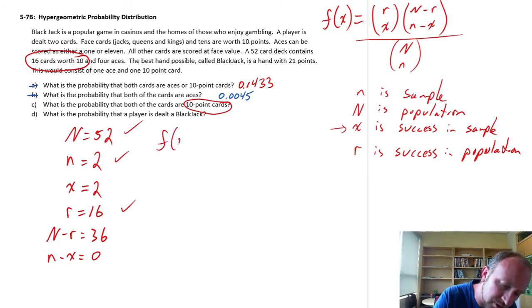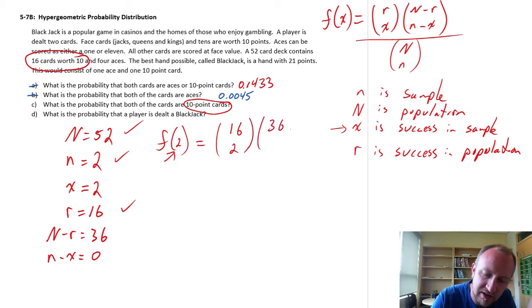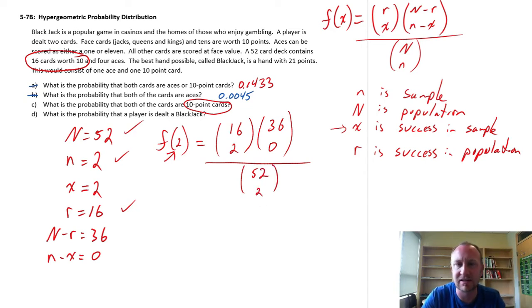So this is the probability of 2 successes. Given a population that contains 16 successes, I want to pick 2. There's 36 failures, I don't want any. Divided by my sample size, sorry, my population size hasn't changed, this is still 52, and my sample size hasn't changed, this is still 2.